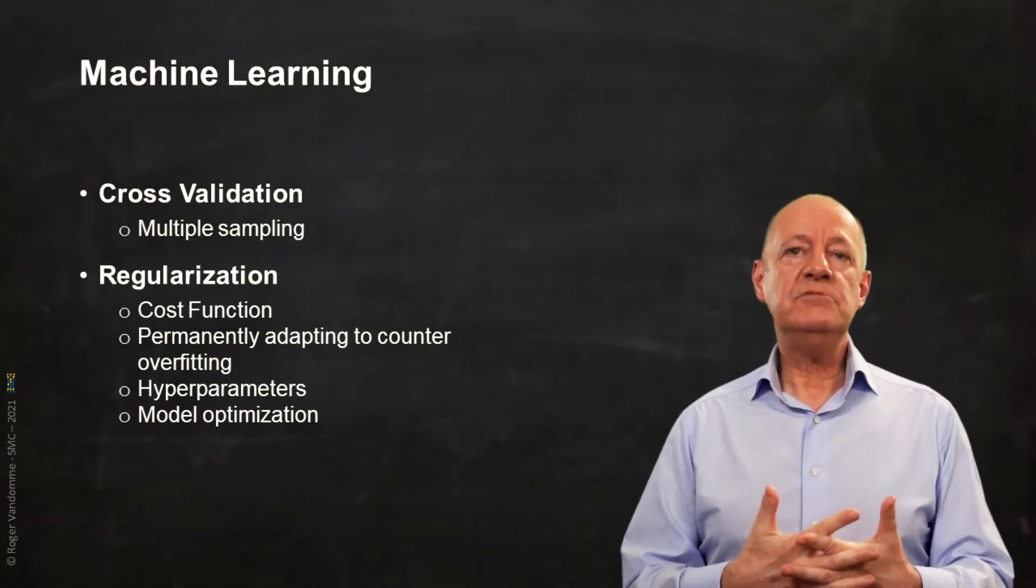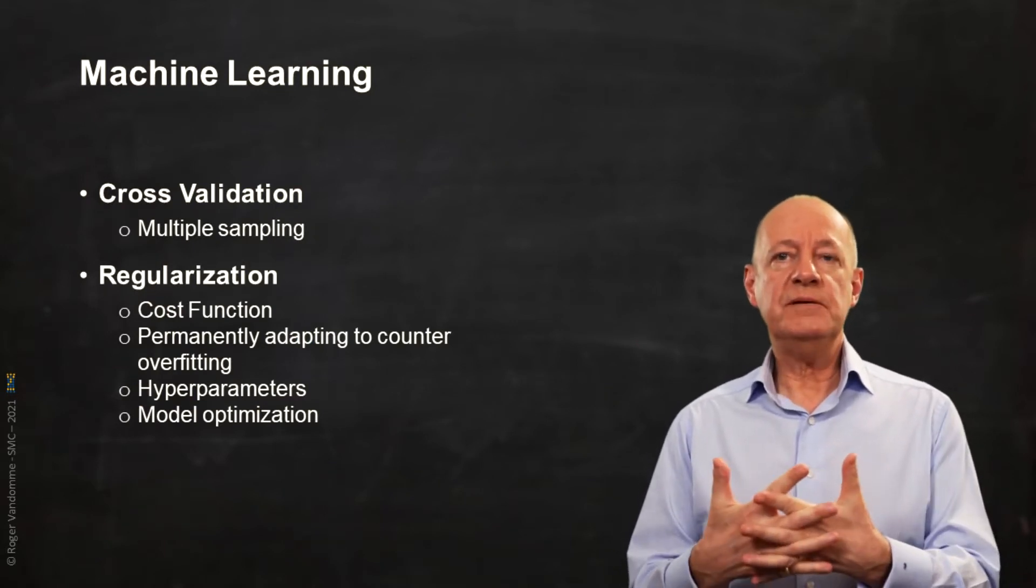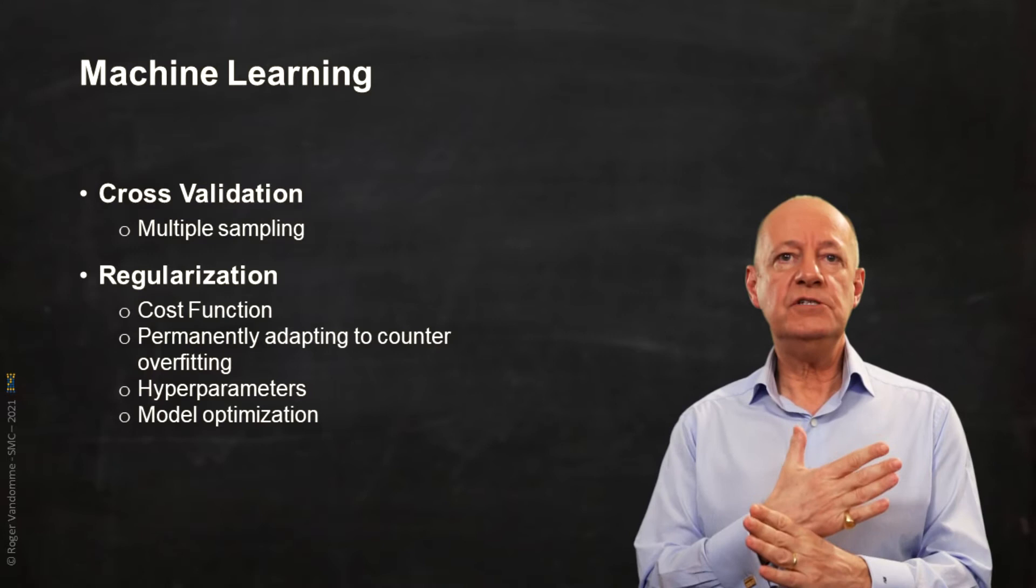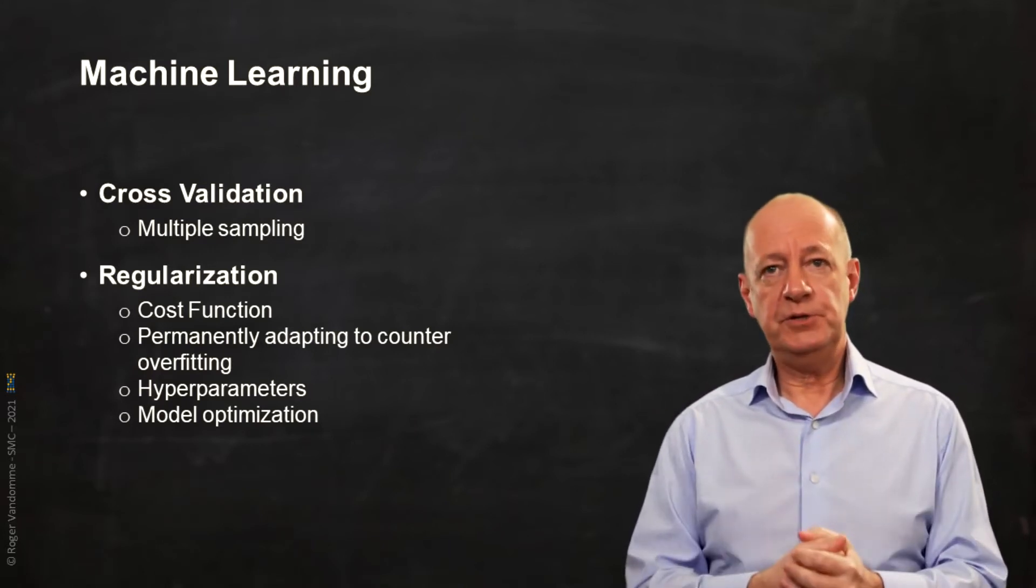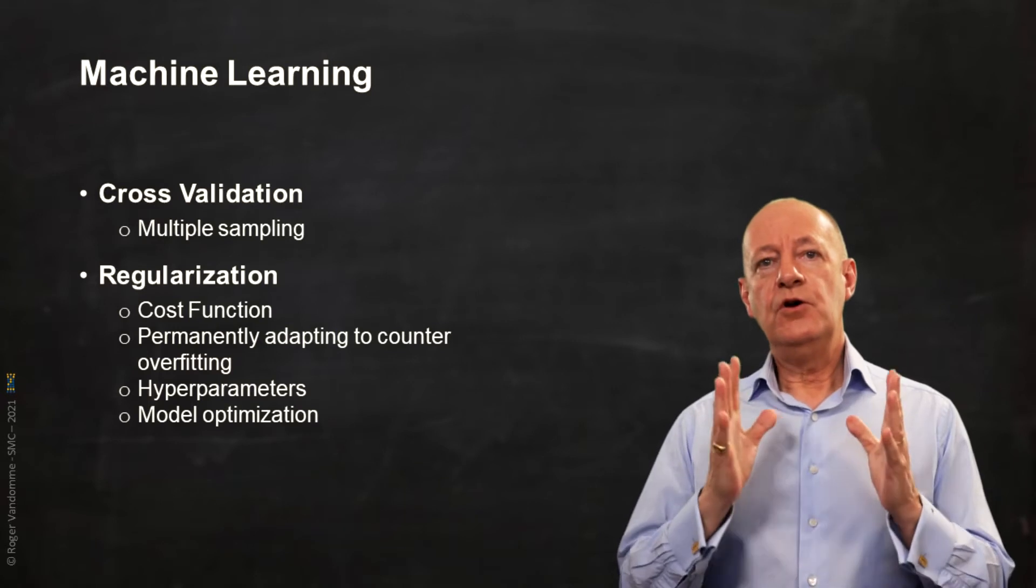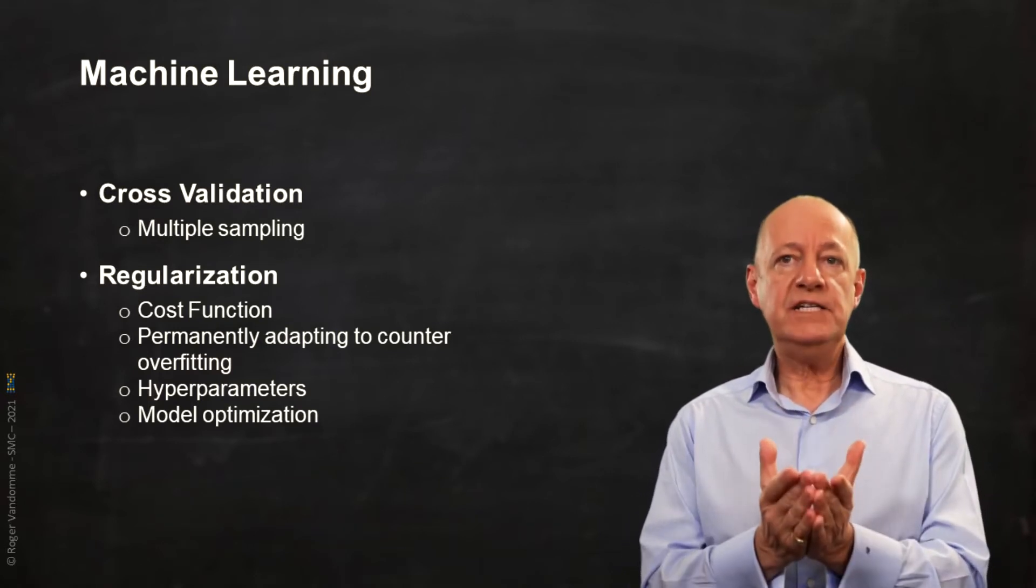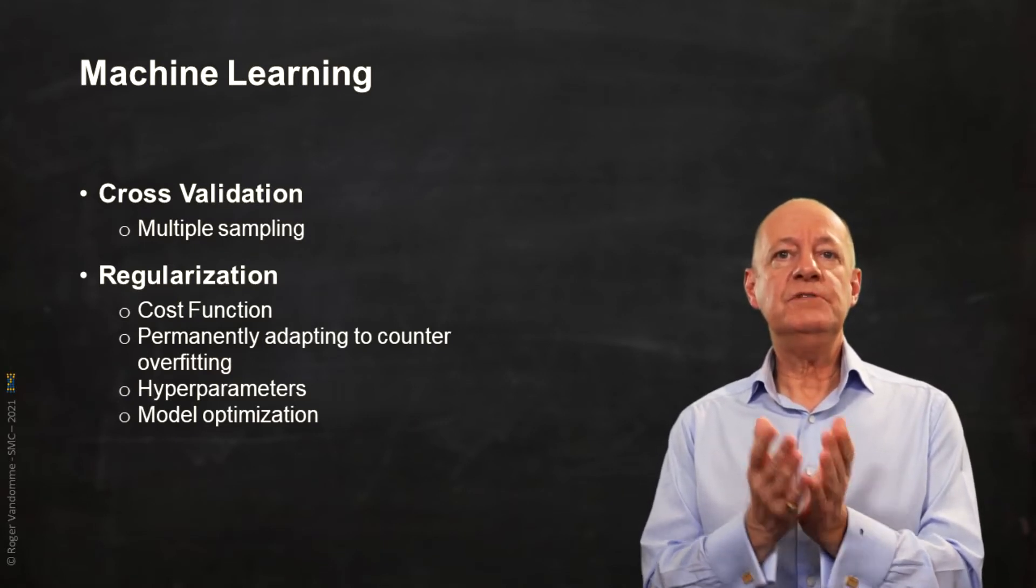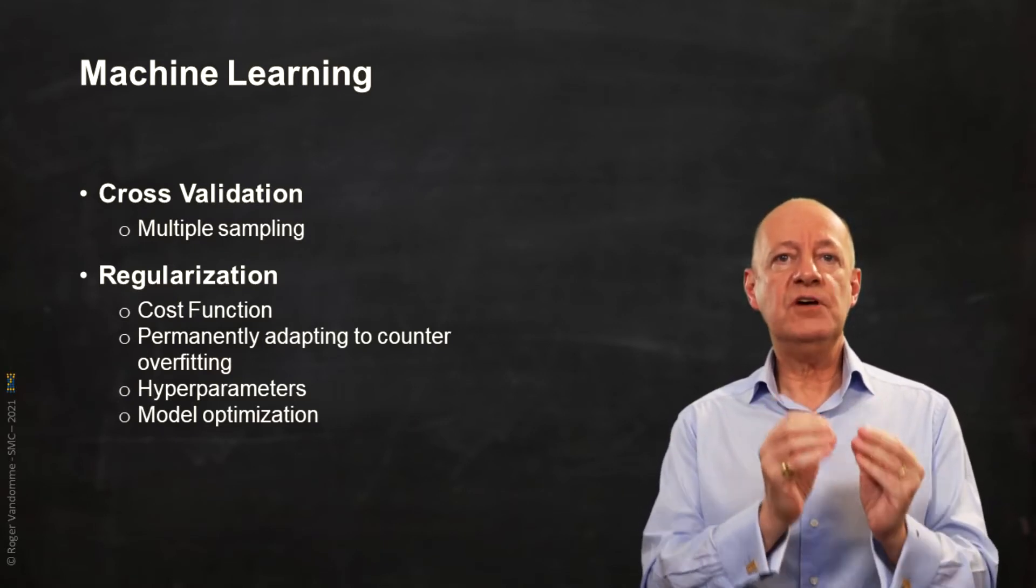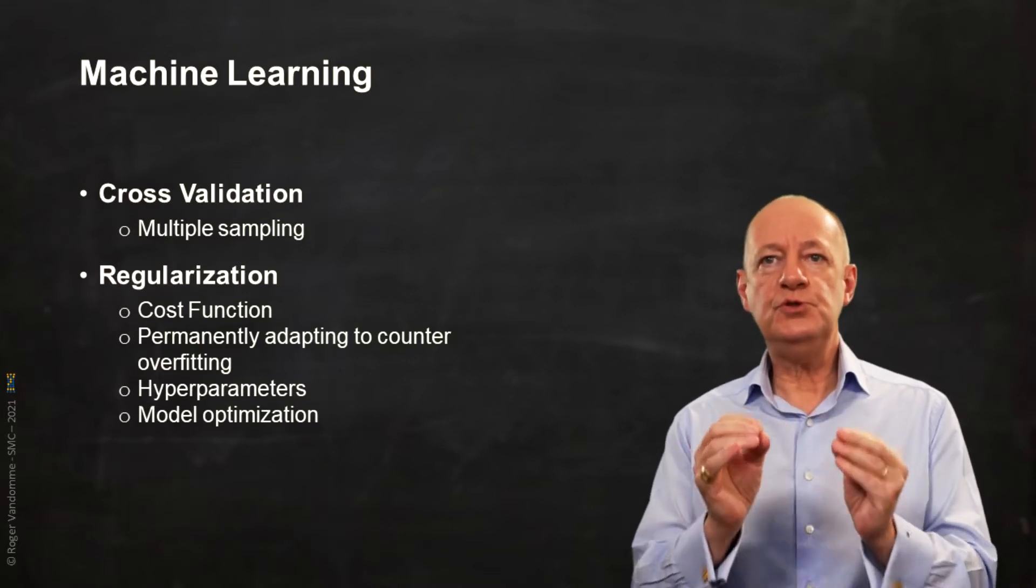The solution that has been found is based on the concept of cross-validation and regularization, which define machine learning. Cross-validation is based on the validation principle we have seen previously, which is to test our model on the sample that was not used to make it.